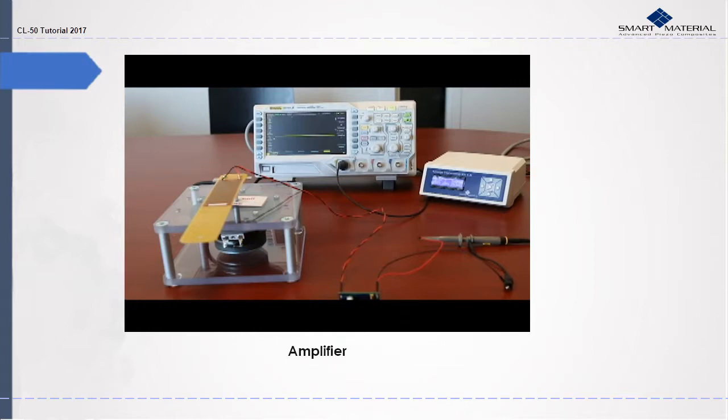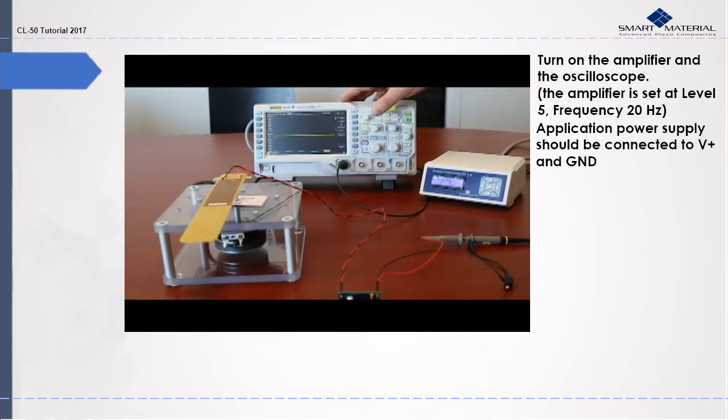Make sure you have attached the MFC to the MFC in on the back of the CL-50 module and make sure also you have the red cable attached to the oscilloscope probe. Now turn on your amplifier and your oscilloscope.